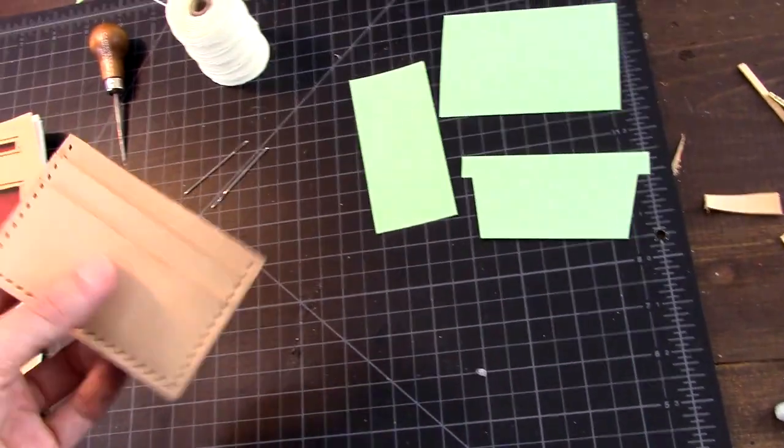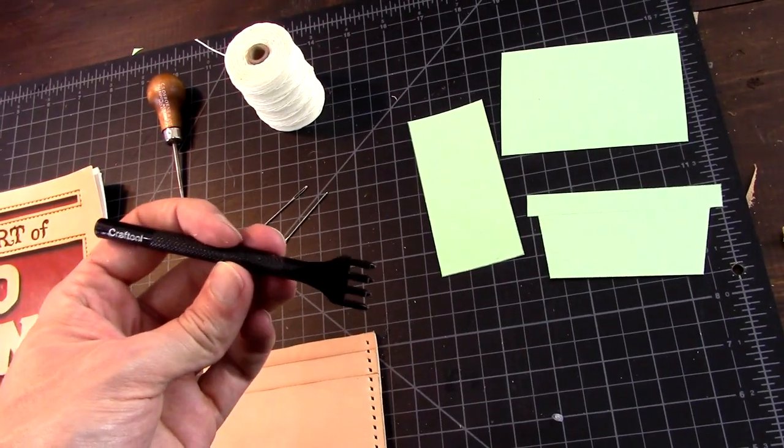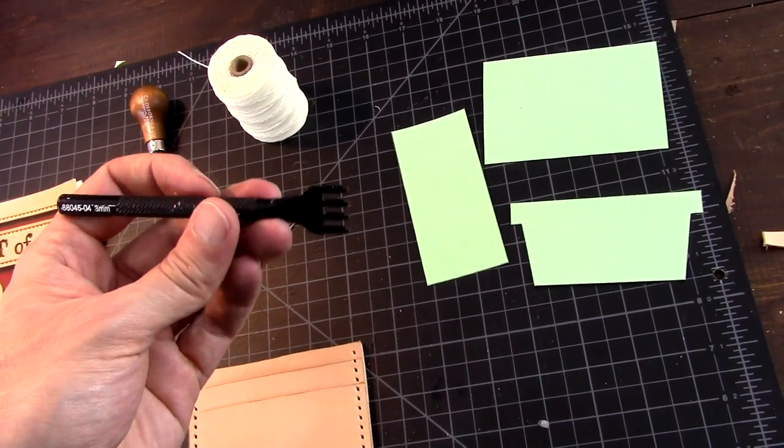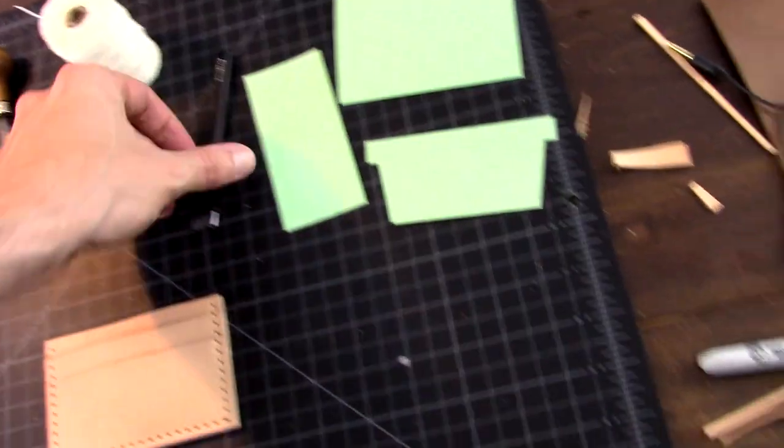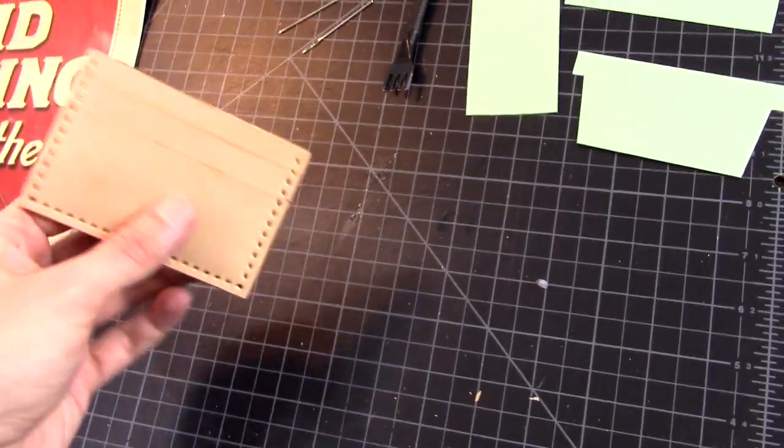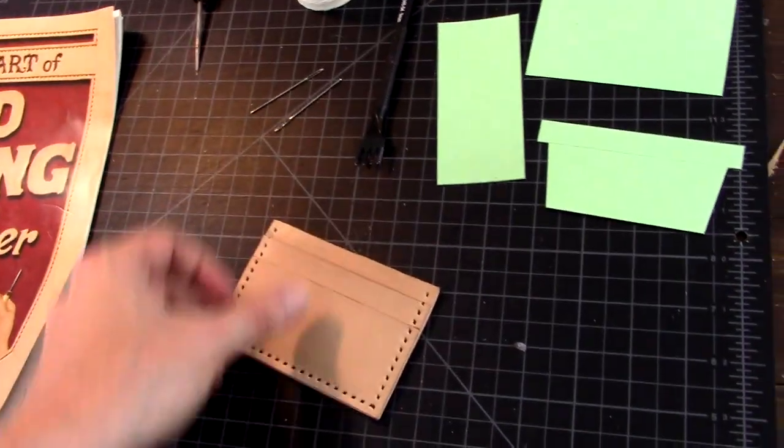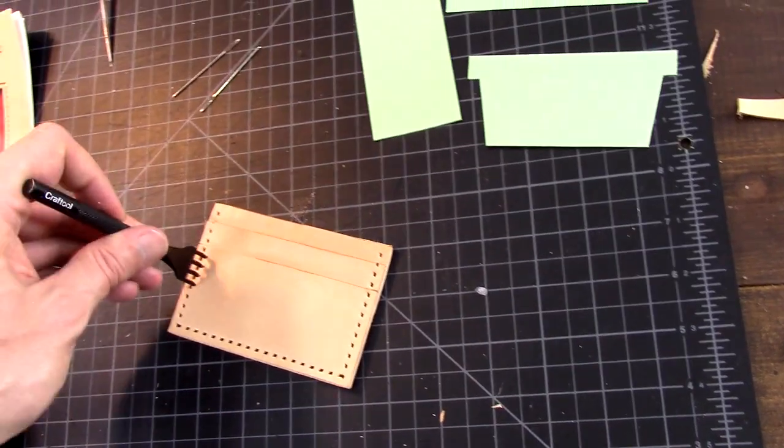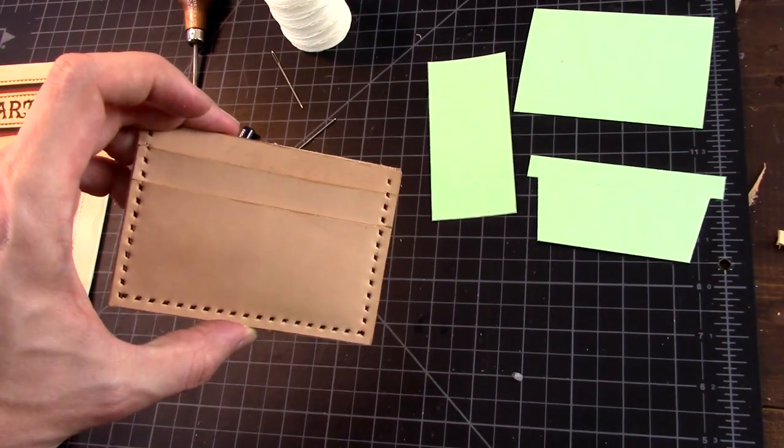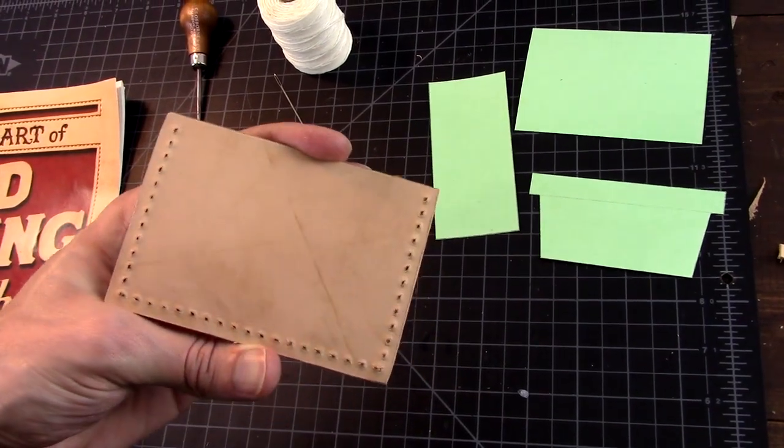And right now I am at the point where I went through with the diamond chisels. This time I'm using the Tandy Pro line or Tandy Craft Tool, three millimeter spacing. I think it's a little bit easier to see the stitching that we'll be doing. And this is where I am at now. I punched all the way through from the front with the diamond chisel all the way around. Here's the front. Here's the back.